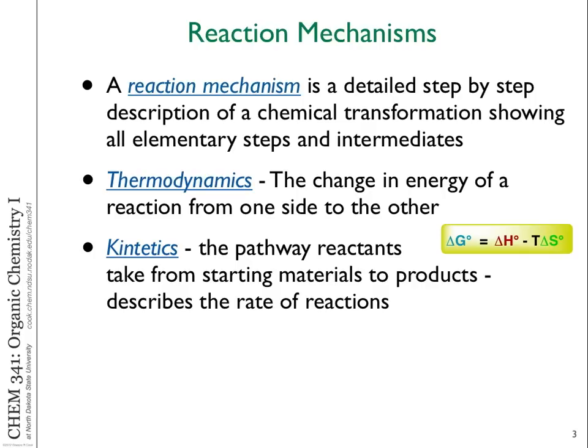Recall from last time we discussed the details of how reactions proceed by looking at the step-by-step processes involved — we refer to that as a reaction mechanism. Generally, especially if we encounter a new reaction, we propose what those steps might be based on what we know about chemistry, then we try to do experiments to show that those steps are what actually takes place. We can try to identify if there are intermediates in the reaction, and data has to be aligned with what we're proposing for the individual steps.